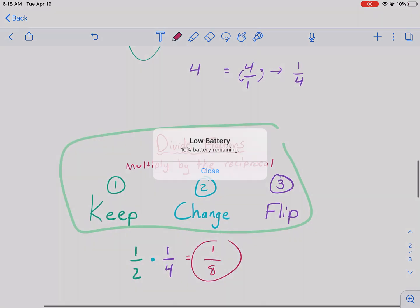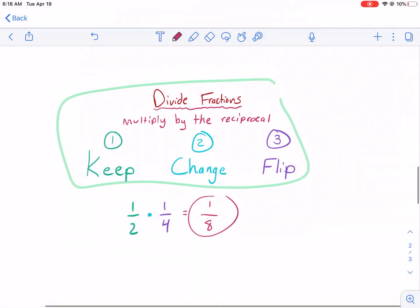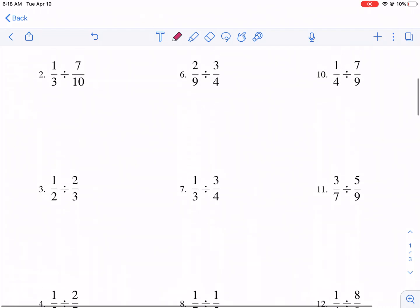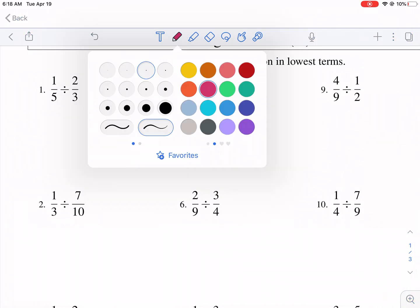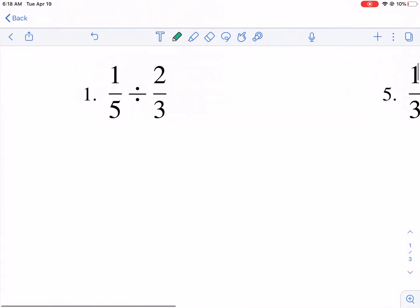Now we can apply keep, change, flip to the rest of these problems. And it's pretty straightforward from here. Let me show you what that looks like. First problem, 1/5. So this is the part we're going to keep, 1/5. I would rewrite all these problems. So change. We're going to change this to multiplication. And then flip. We're going to flip this to be 3/2 instead of 2/3. And then we just multiply.